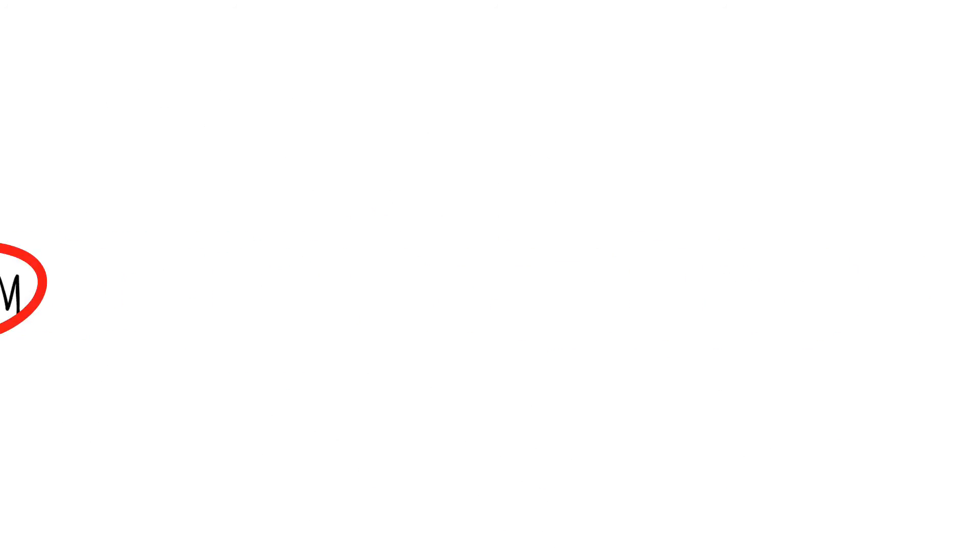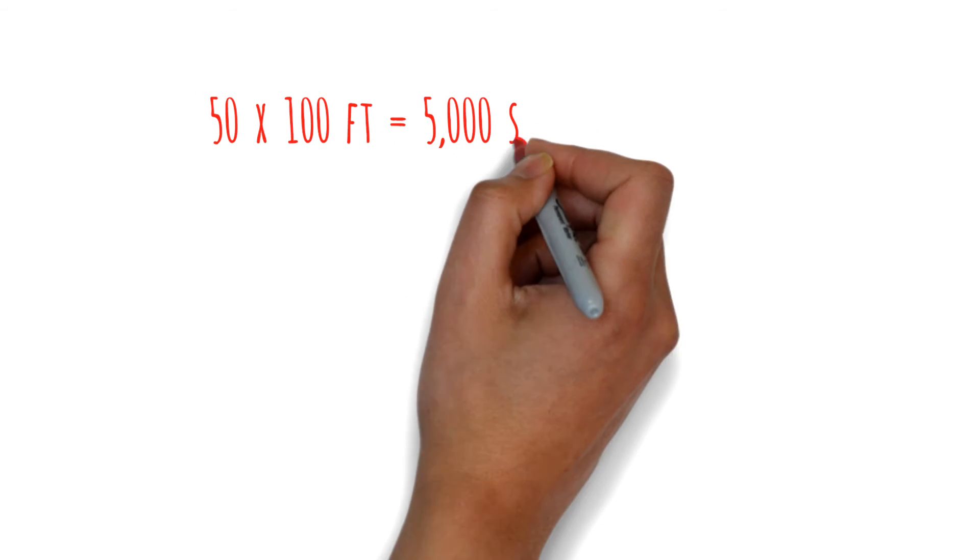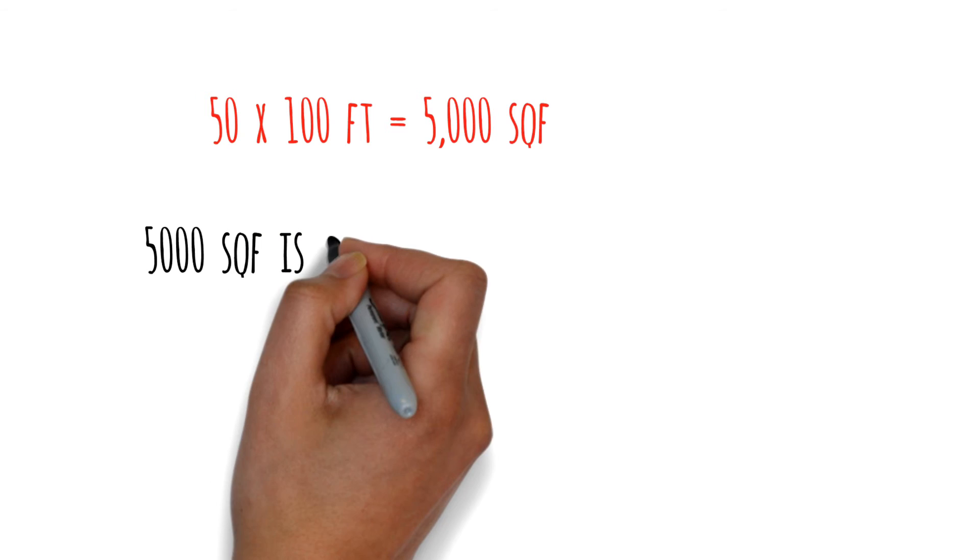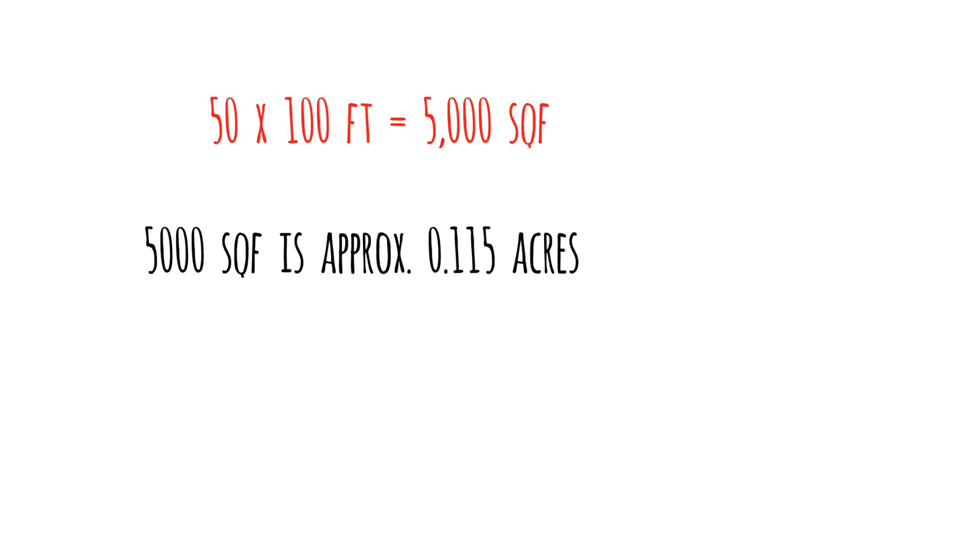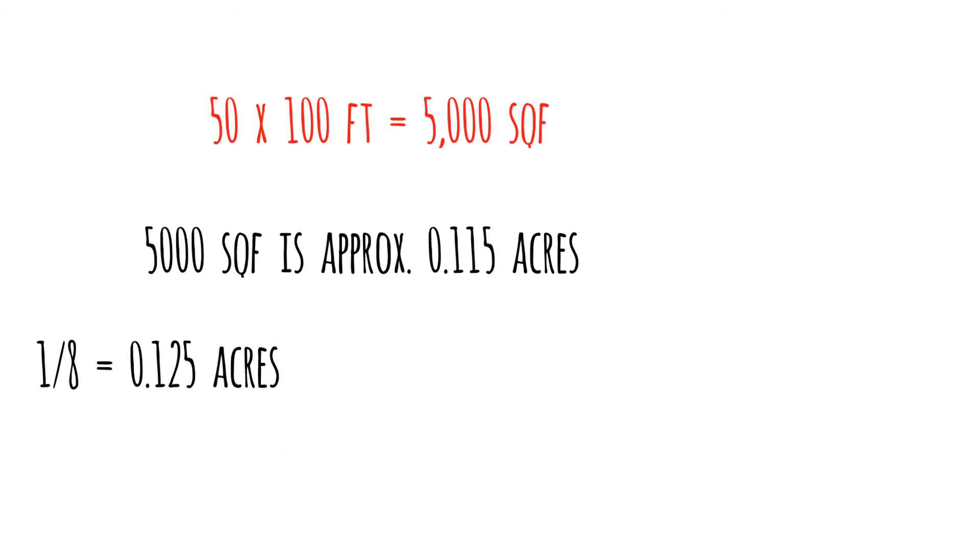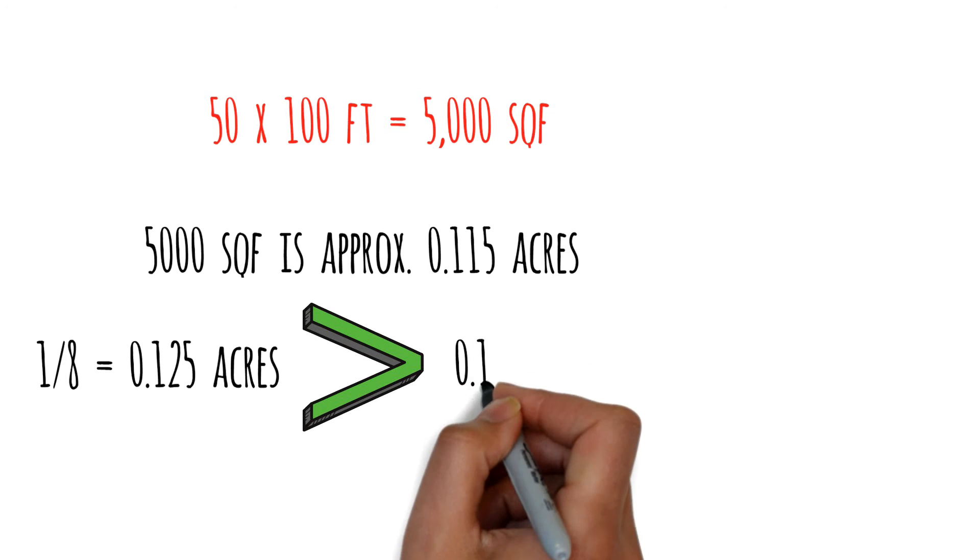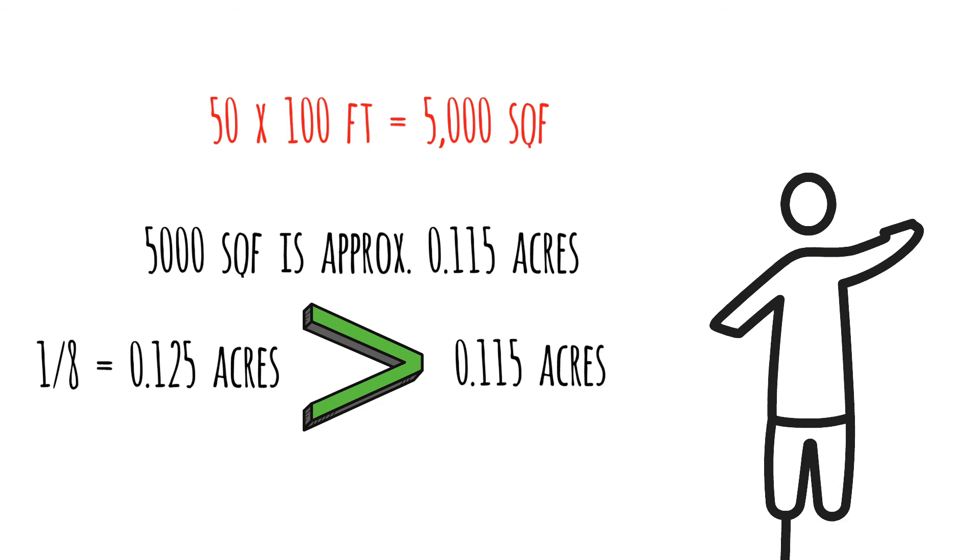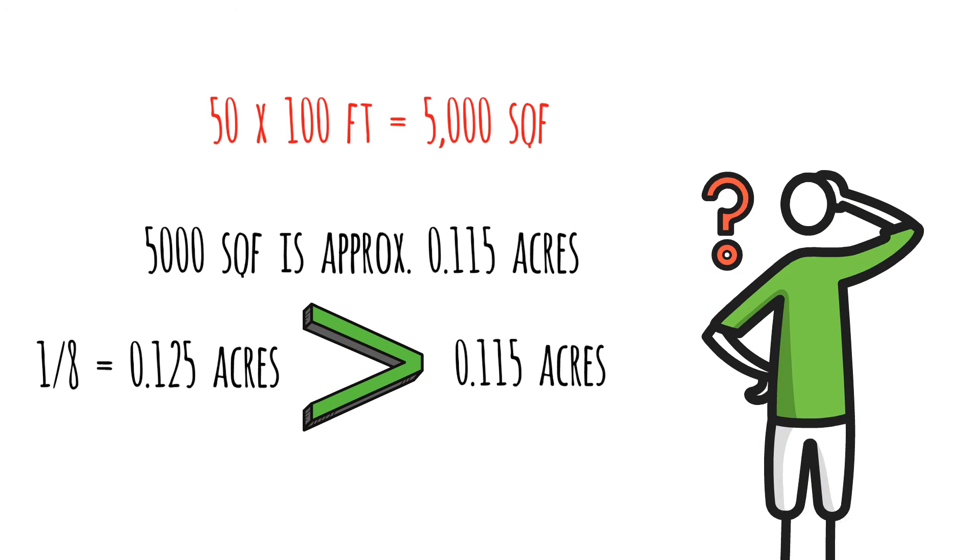So what if we multiply 50 by 100 to get 5,000 square feet? When we convert 5,000 square feet into acres, we get approximately 0.115 acres. An eighth of an acre in decimals is 0.125 acres. Clearly, a 50 by 100 foot plot is less than an eighth of an acre.